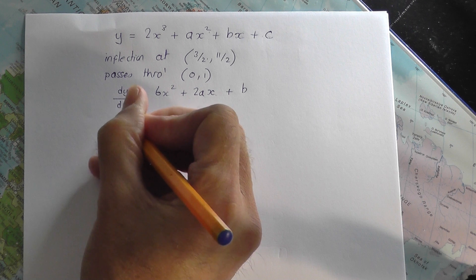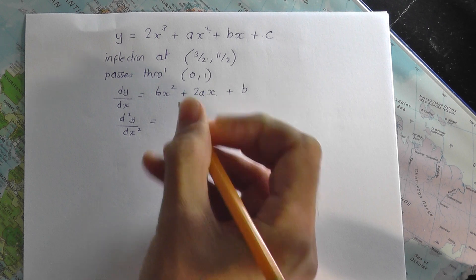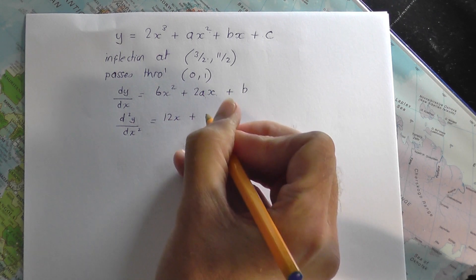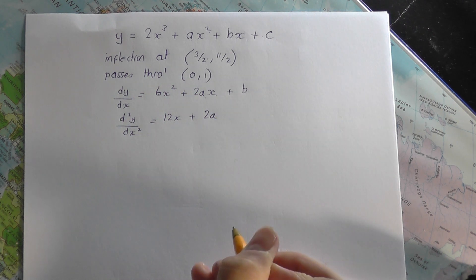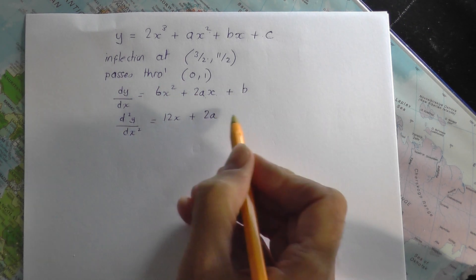Instead, what I'm going to do is differentiate again to get the second derivative. 6x squared becomes 12x, plus 2ax, differentiate, you get 2a. Differentiate plus b, remember b is just a number, that becomes nothing.